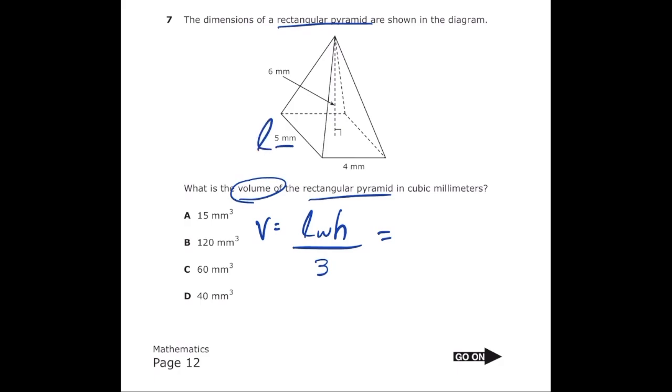If I look at my pyramid, I'm going to see that I have a length of 5, a width of 4, and a height of 6. So I'm just going to plug in my numbers. So 5 times 4 times 6, all divided by 3. 5 times 4 is 20, times 6 is 120. So 120 divided by 3 is going to be 40. And if I look at my answer choices, I'm going to get letter D.